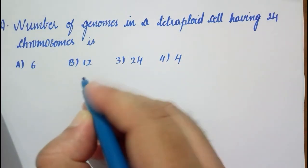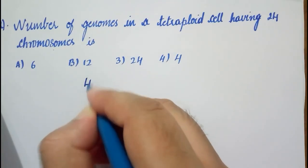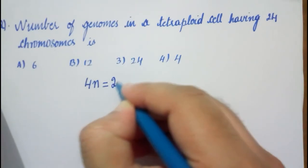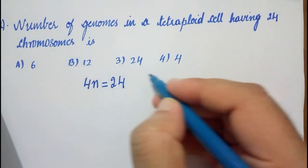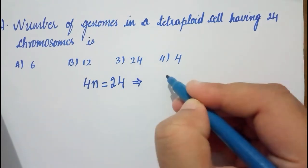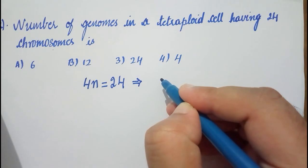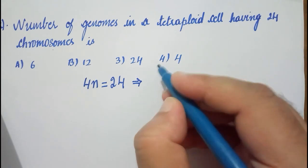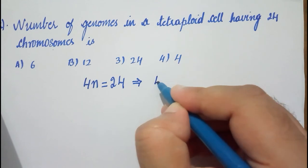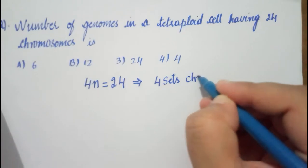The question says there is a tetraploid cell. What is a tetraploid cell? A tetraploid cell is one having four sets of chromosomes. So tetraploid means four sets of chromosomes.